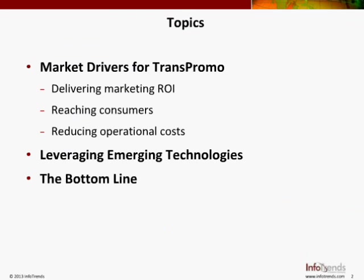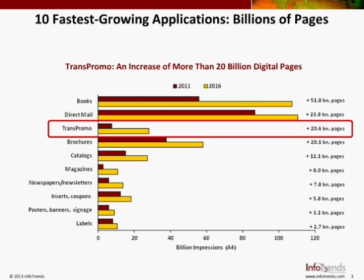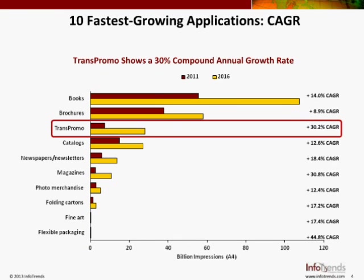One of the things InfoTrends does is a significant number of market forecast activities. Every year we do an application forecast and look at the highest growth areas in the marketplace. On the transpromotional side, it's projected to grow by more than 20 billion digital pages between now and 2016. The trans promo market is projecting high growth — a 30% compound annual growth rate. And there are a lot of good reasons for that.